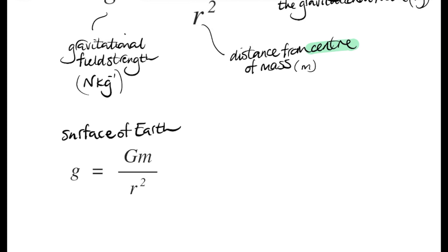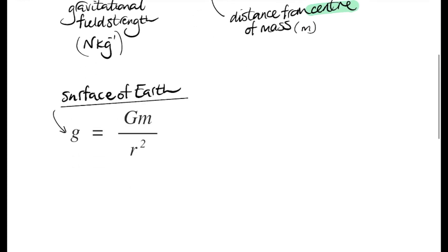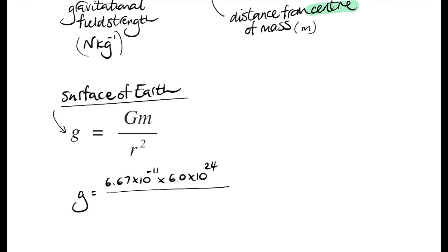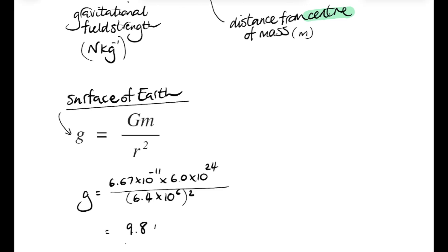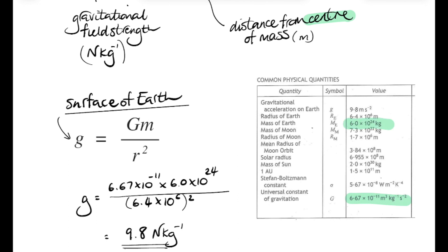So if we want to work out what the gravitational field strength is on the surface of the Earth — and the symbol for gravitational field strength is a small g — then it'll be 6.67 times 10 to the minus 11 times the mass of the Earth, which is 6 times 10 to the 24, divided by the radius of the Earth squared. The radius of the Earth is 6.4 times 10 to the 6, and that gives you an answer of 9.8 newtons per kilogram. That's why g at the surface of the Earth is 9.8, and all that data is available on your data sheet.